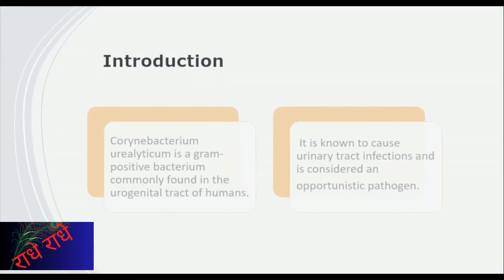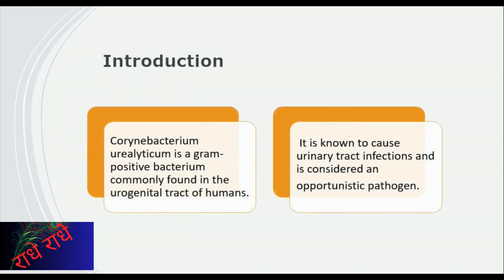Coronybacterium ureoliticum is a gram-positive bacterium frequently seen in the human urogenital tract. Linked to urinary tract infections, it is an opportunistic pathogen, meaning it can trigger sickness in individuals with vulnerable immune systems. To enhance knowledge and management of probable health risks, understanding this bacterium is essential.